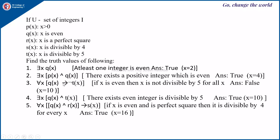Next, ∀x[q(x) → ¬t(x)]: q(x) is x is even, and ¬t(x) means x is not divisible by 5. The meaning is: if x is even then x is not divisible by 5, for all x. Consider x = 10: 10 is even, but 10 is divisible by 5, so ¬t(10) is false. Therefore this statement is false.